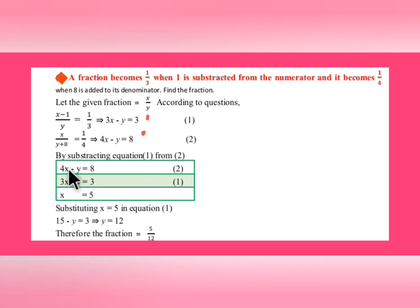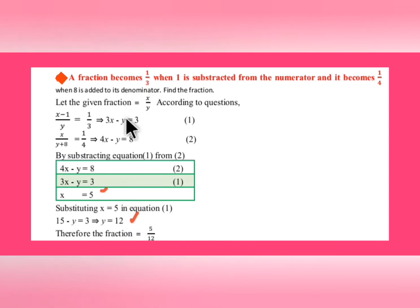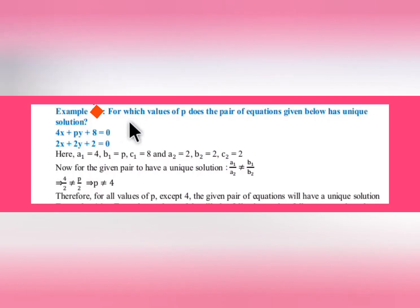You can use any method — multiply equation 1 by 4 and equation 2 by 3 to cancel the x value, or simply subtract equation 1 from equation 2. Substituting the found x value into one of the equations gives the value of y. The fraction x/y is 5/12.